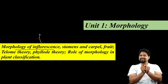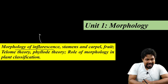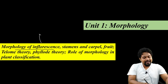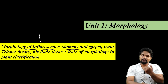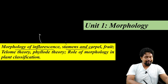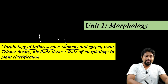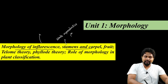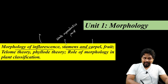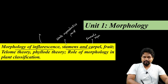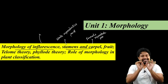I will discuss morphology. Next I will discuss stamen and carpel. Stamen is the male reproductive part. Carpel means female reproductive part. So male and female reproductive parts we discuss in detail.